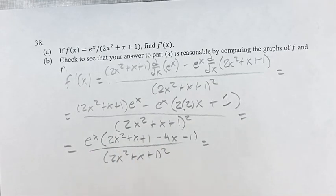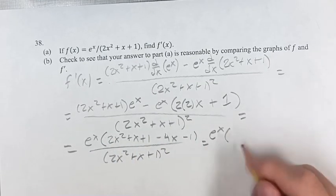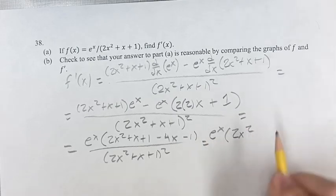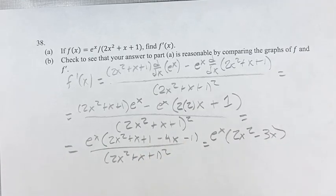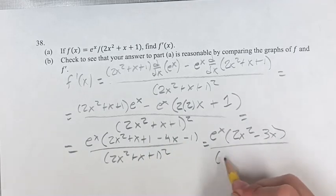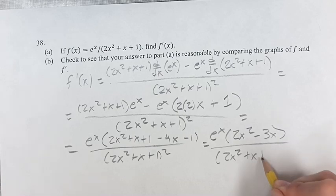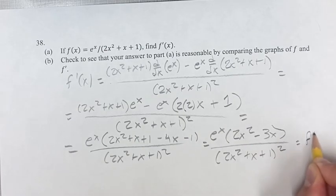One last step, simplifying, combining like terms. We have e to the x times 2x squared plus x minus 4x is minus 3x plus 1 minus 1 is 0. This is over 2x squared plus x plus 1 squared. And this is your derivative.